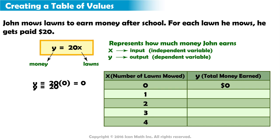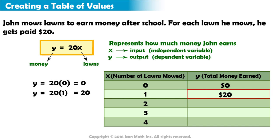Next, we will insert the next x value, 1, into our equation. y equals 20 multiplied by 1. 20 multiplied by 1 equals 20. If John mows 1 lawn, he will earn $20.